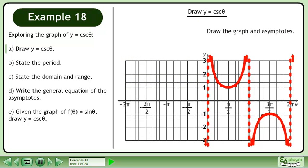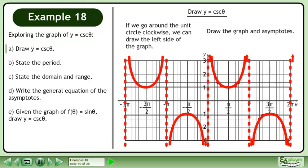Draw the graph and asymptotes. If we go around the unit circle clockwise, we can draw the left side of the graph.